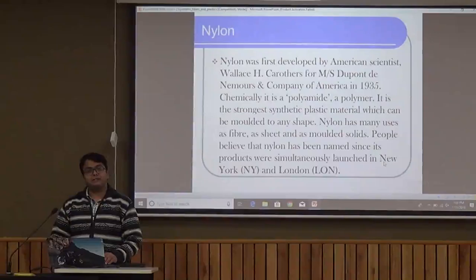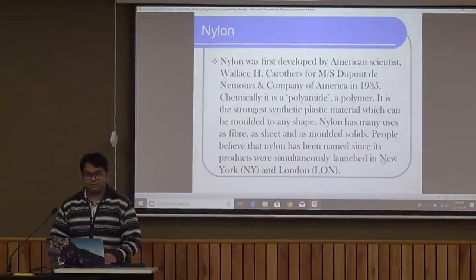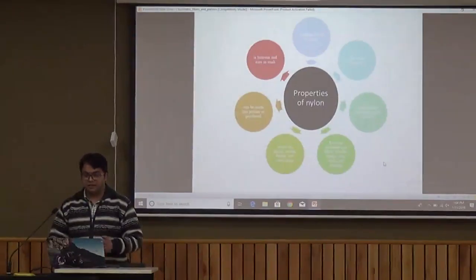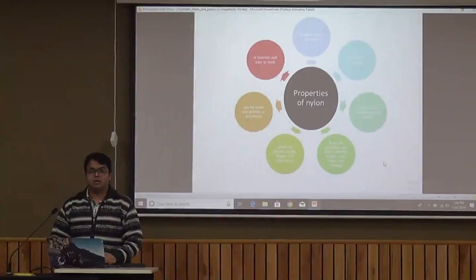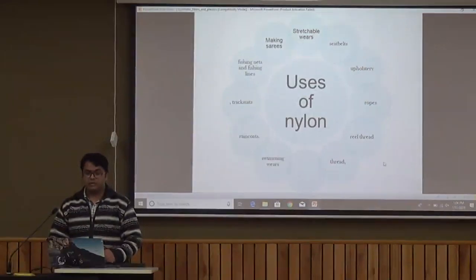Nylon was the very first synthetic fiber created by humans. Its name is derived from the cities New York and London, which were prominent at that time. It is basically a polyamide — a polymer of various amides. It is used as fiber, sheet, and many other forms. Its properties: it is lustrous, easy to wash, tough, and has very high tensile strength. It absorbs very little water and does not react with air or water. It resists oil, weather, and organic substances, and can be molded into various different forms. Nylon is used to make sarees, stretchable wear, seat belts, upholstery, ropes, fishing line thread, swimming wear, raincoats, tracksuits, fishing nets, and scuba diving devices.